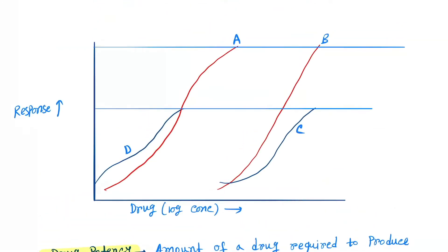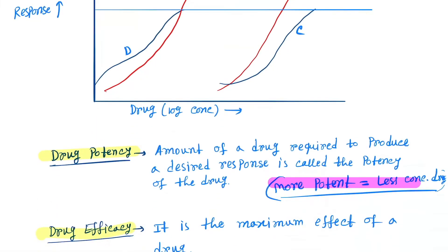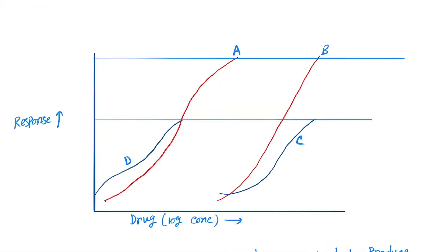You can see a graph now. This is drug A, this is drug B, this is drug C, and this is drug D. Now you can see that both A and B produce the same response, so their efficacy is equal. Efficacy A equals efficacy B.